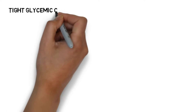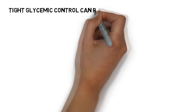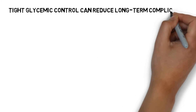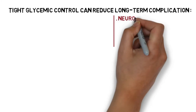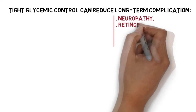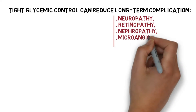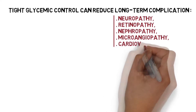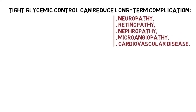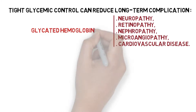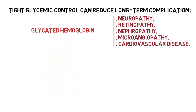Tight glycemic control for diabetes mellitus patients can potentially reduce long-term complications such as neuropathy, retinopathy, nephropathy, microangiopathy, and cardiovascular disease. That's why it's very important to understand glycated hemoglobin and its pathogenesis in diabetes mellitus.